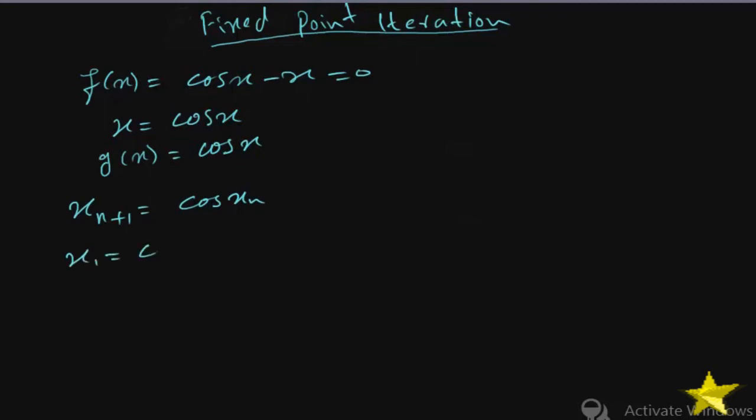To get the general equation for iteration is x subscript n+1 equal to cos(x subscript n). In other words, x1 will be equal to cos(x naught). This is the equation, very critical and important as I mentioned.